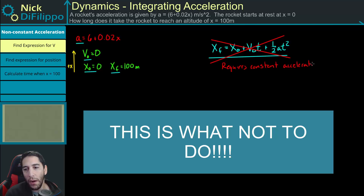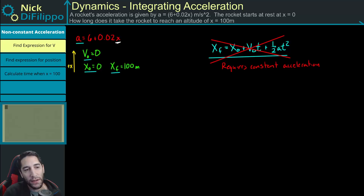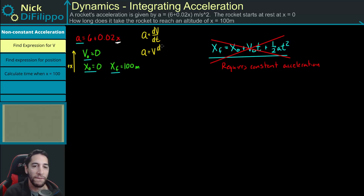This equation is not valid because it requires constant acceleration. In our problem, this is not constant acceleration because our acceleration depends on some distance we've traveled. So we need to go back and look at the equations we have for acceleration. One equation is acceleration equals the derivative of velocity with respect to time. The other is acceleration equals velocity times the derivative of velocity with respect to position.